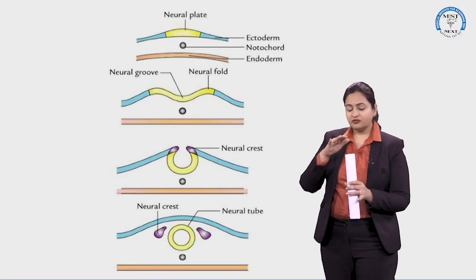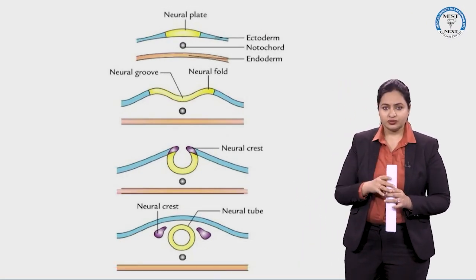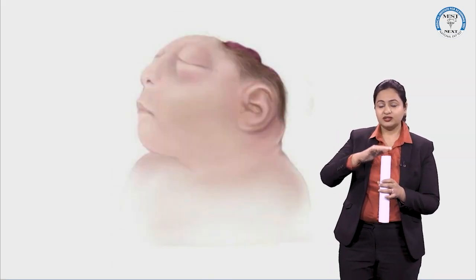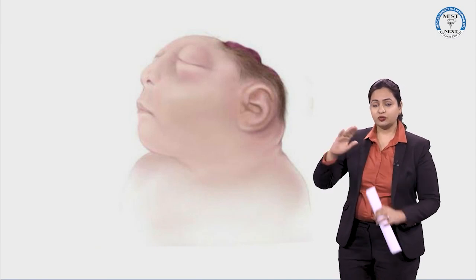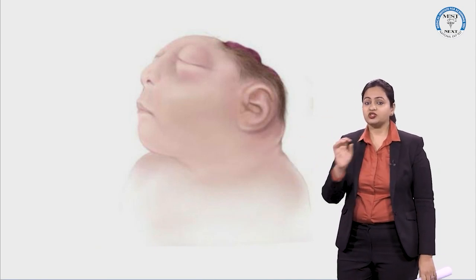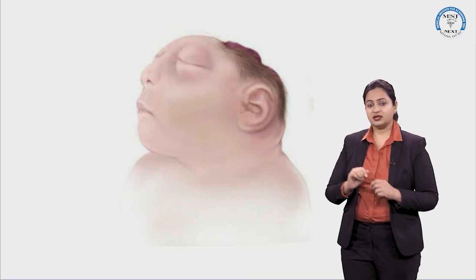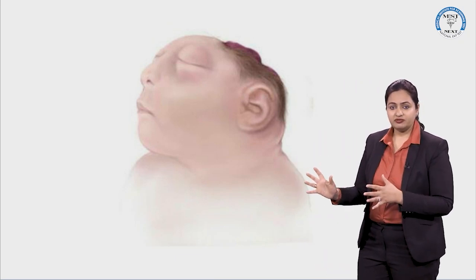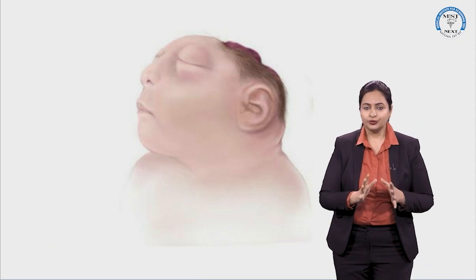If the cranial neuropore does not close, it leads to a congenital anomaly termed anencephaly. In this condition, the skull bone towards the head side is absent, and as a result the brain and meninges are exposed to the outside. This condition is caused by a defect in the closure of the cranial neuropore.